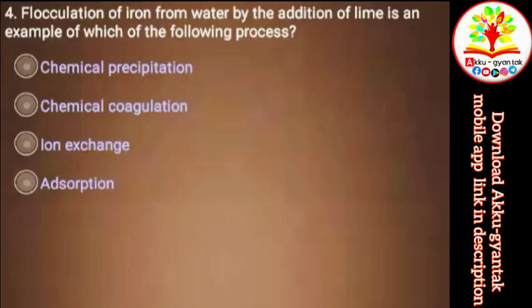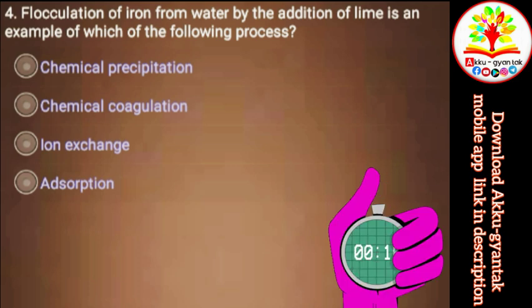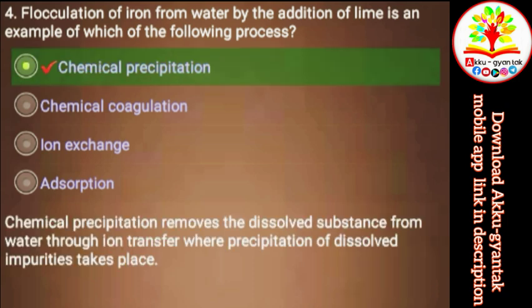Flocculation of iron from water by the addition of lime is an example of which of the following processes? a) Chemical precipitation, b) Chemical coagulation, c) Ion exchange, d) Adsorption. Right.